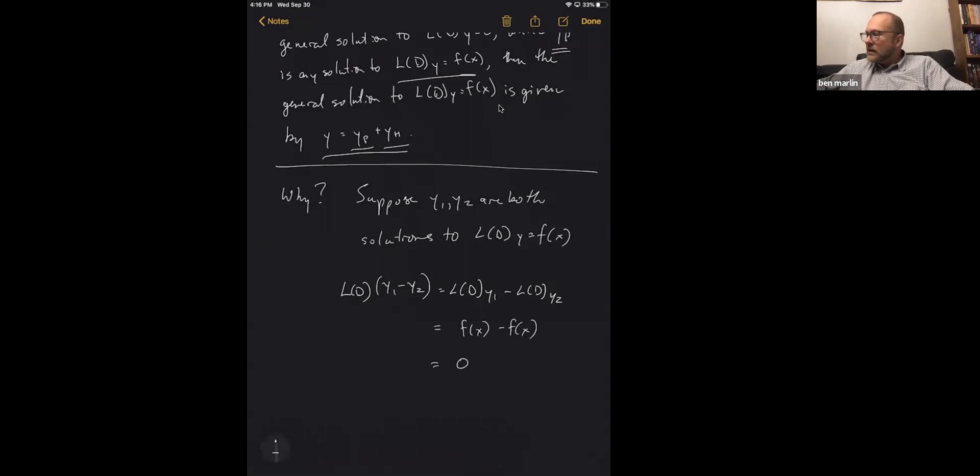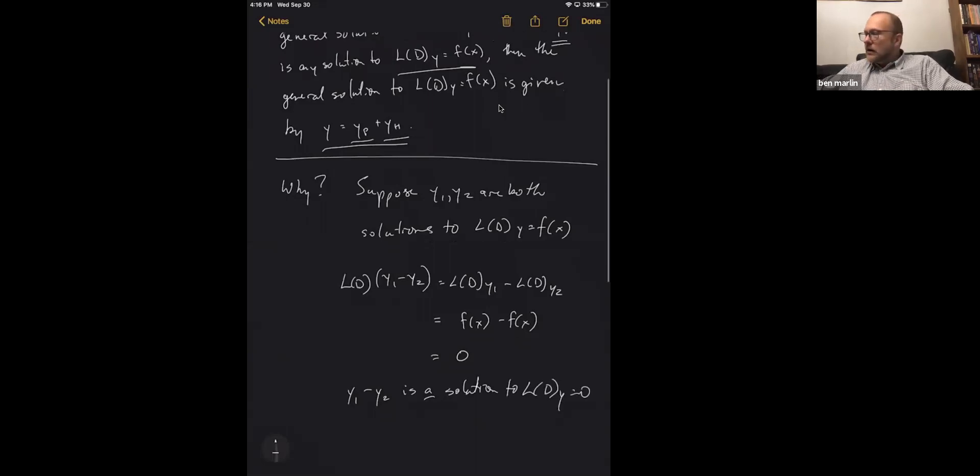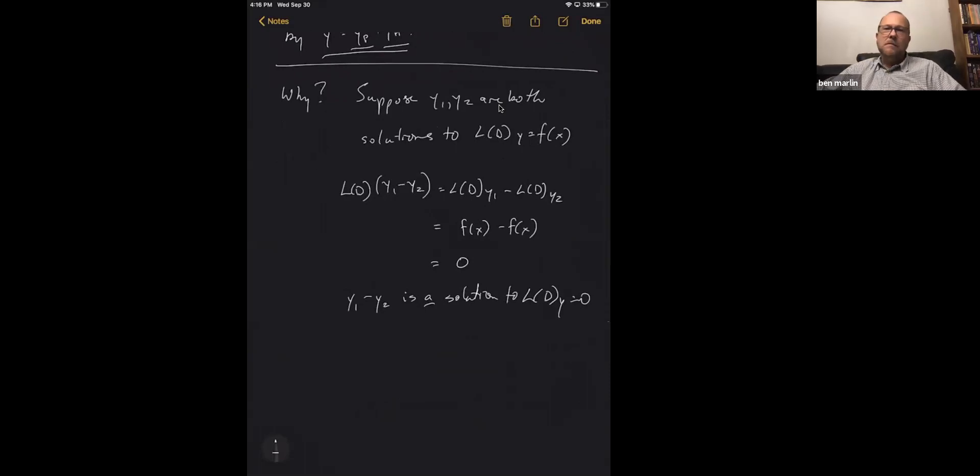That means that y1 minus y2 is a solution to the L of D y equals zero. Now, because we just picked some particular two solutions, y1 and y2, then that's really saying that you could have picked any two solutions.